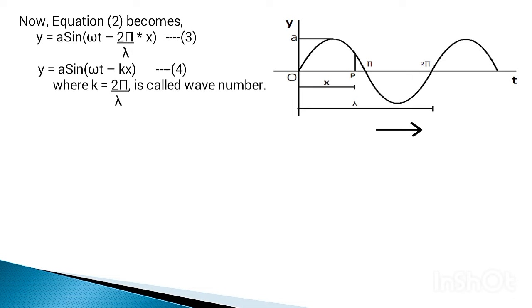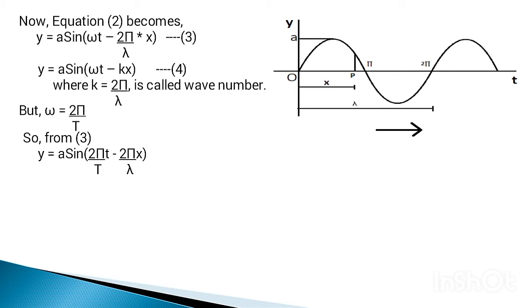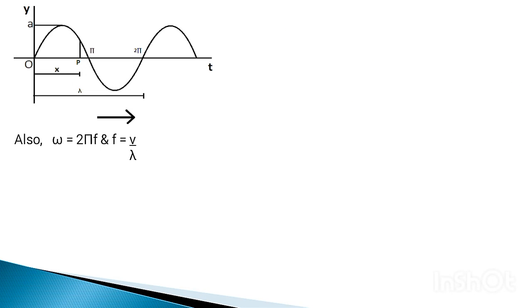The equation of progressive waves can be modified into several forms. We know that omega equals to 2 pi over T. Substituting this in equation 3, we get y equals to a sin(2 pi over T times t minus 2 pi over lambda times x), which gives y equals to a sin 2 pi times (t/T minus x/lambda). This is the equation of a progressive wave in another form.